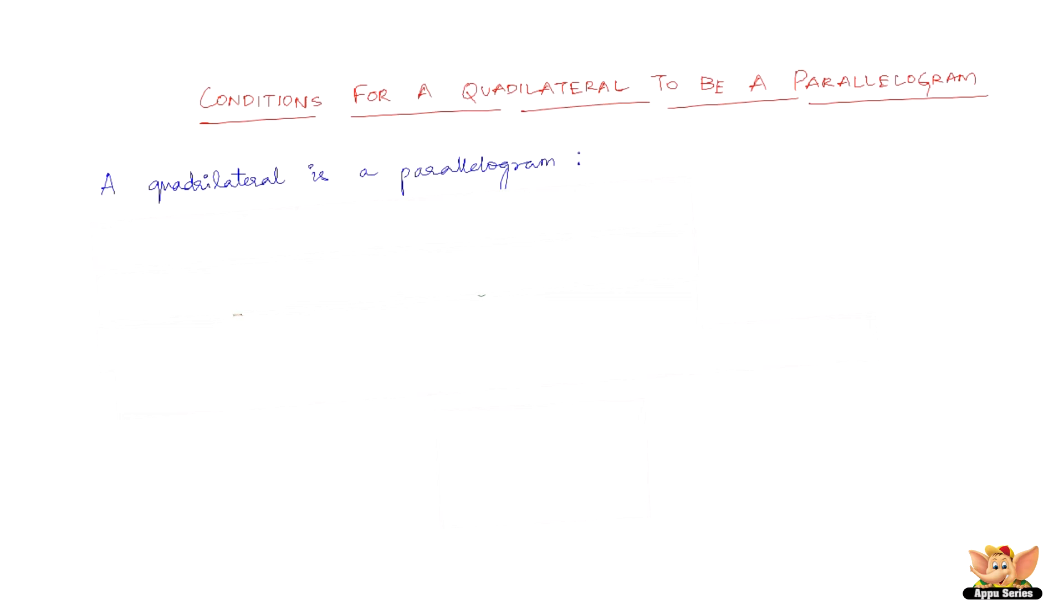So let us see what are the conditions that are stated here. A quadrilateral is a parallelogram if both pairs of opposite sides are equal.